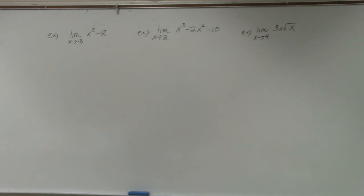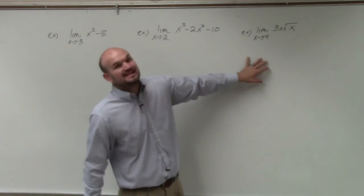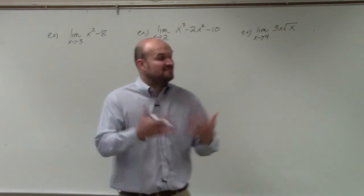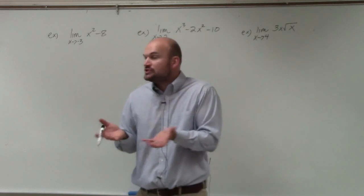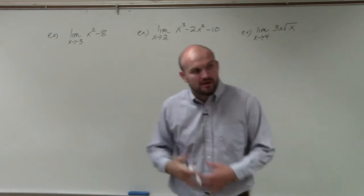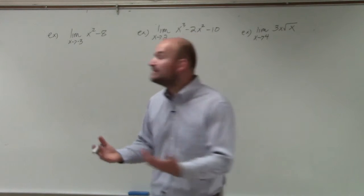Quickly, when you're looking at this, ladies and gentlemen, we can identify by inspection that these are going to be three examples of continuous functions. So to evaluate the limit, the value of what the function is approaching as x approaches negative 3, as x approaches 2, and as x approaches 4, we can simply just plug in the value.